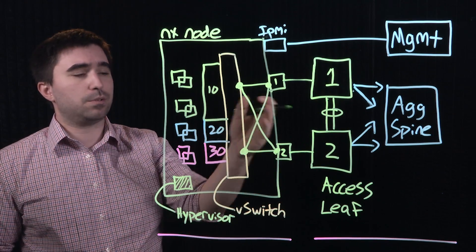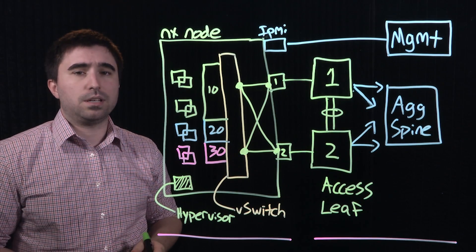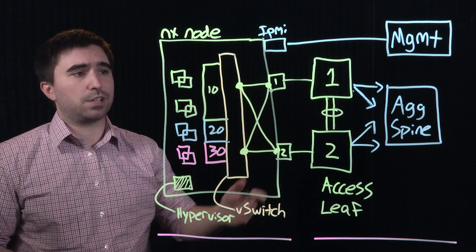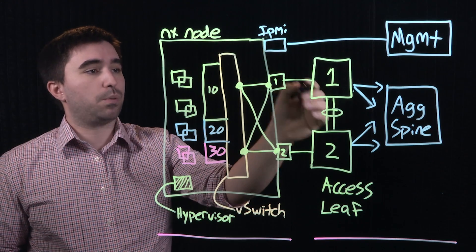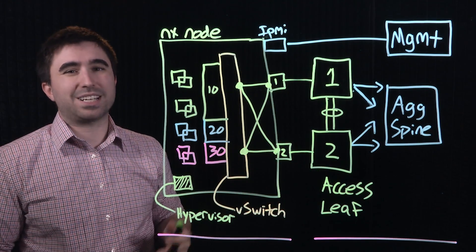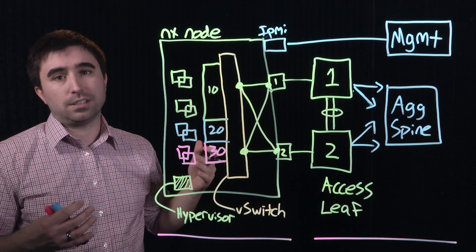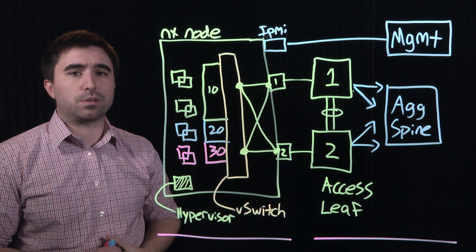Likewise, similar configuration is needed on the physical switches. It's notable that an ether channel or LACP type configuration that spans two physical switches requires support on the physical switch for technologies like Cisco's virtual port channel, Arista multi-chassis link aggregation, or the equivalent technology from your network switch vendor.